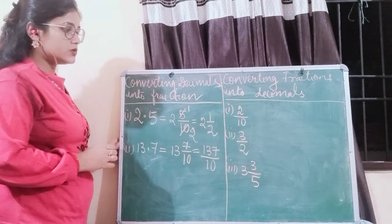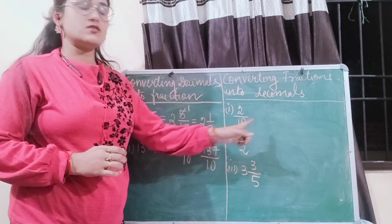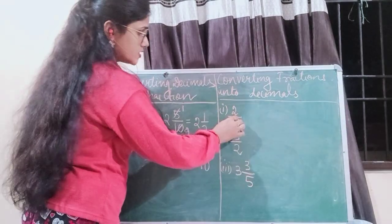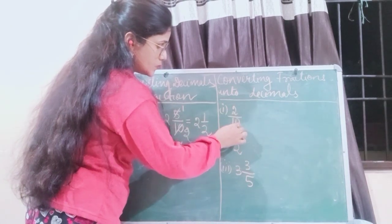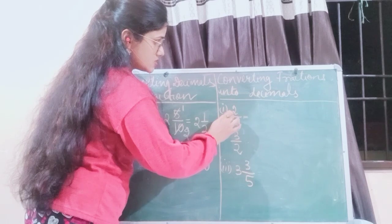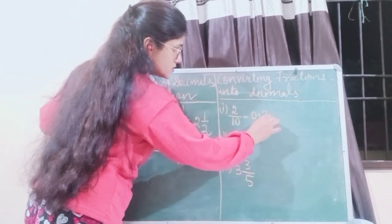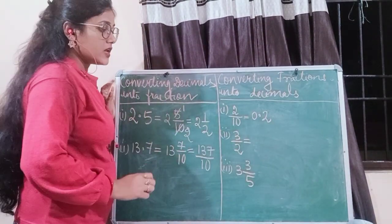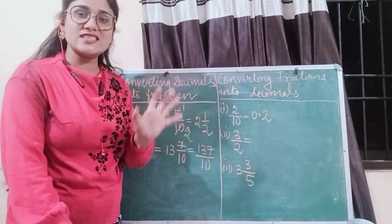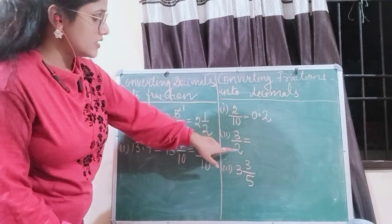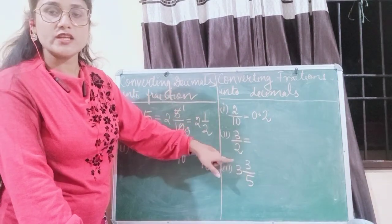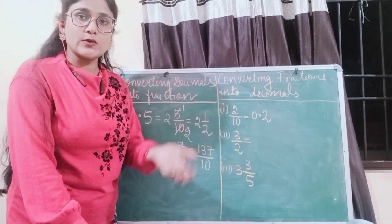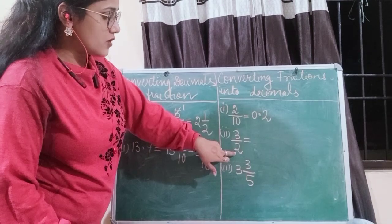Now next comes converting fractions into decimals. To convert fractions into decimals, you will see what is the number - like here it is 2 by 10, that means it is 0 point. Now the next fraction is 3 by 2. The easiest way is that you multiply a number with the denominator so that you get a rounded number such as 10, 100, 1000 etc. So here the nearest rounded number is 10.